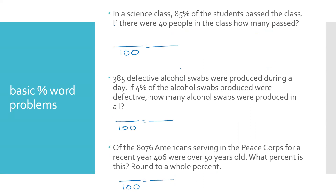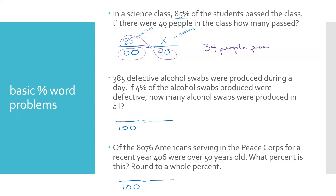Problem 1: In a science class, 85% of the students passed the class. If there were 40 people in the class, how many passed? The percent always goes over 100, so 85 over 100. The 85 represents how many passed, so the top will also be how many passed. There are 40 people total, so that goes on the bottom. Cross multiply and divide: 85 times 40, divided by 100, gives 34 people passed.